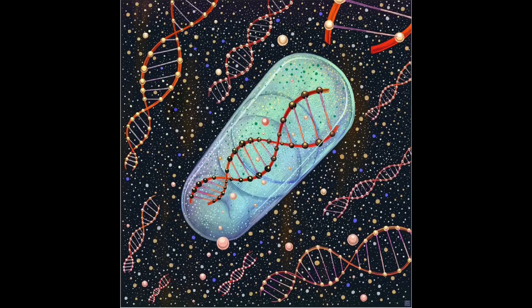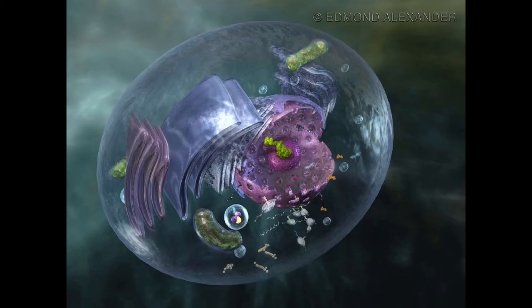Although usually only one or two nucleoli can be seen, a diploid human cell has 10 nucleolus organizer regions and could have more nucleoli. Most often, multiple NORs participate in each nucleolus.